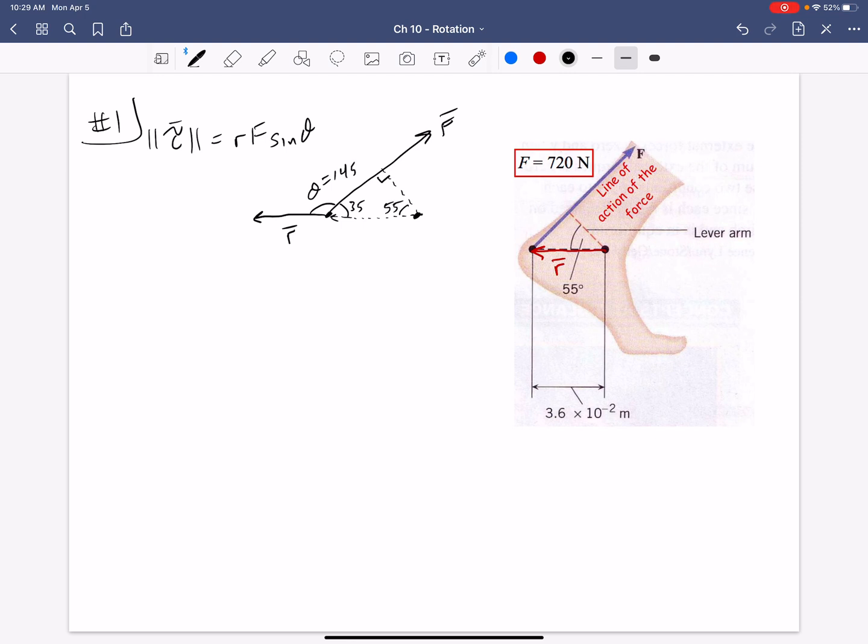And so this torque is now the magnitude of R, which is 0.036 meters, times the force, 720, times sine of 145 in degrees. And we should get a magnitude of 14.6 newton meters. Now, that's the magnitude of torque, 14.6.